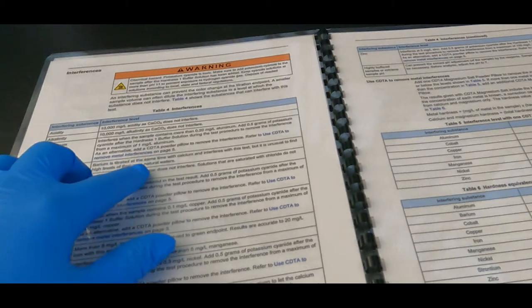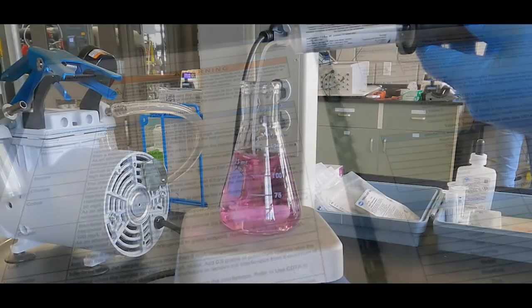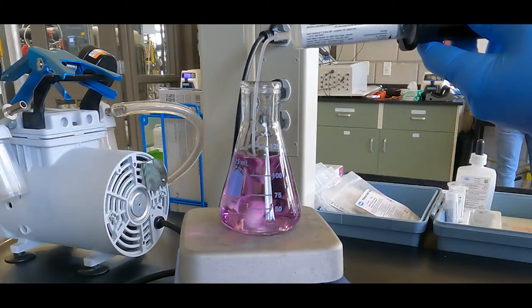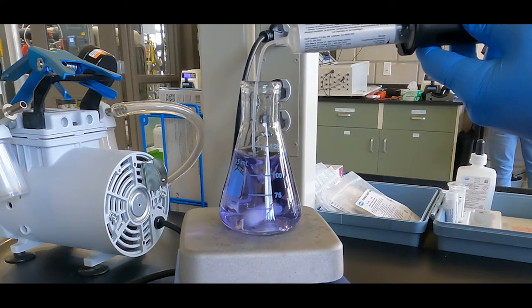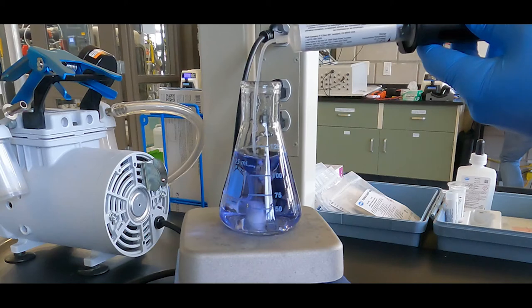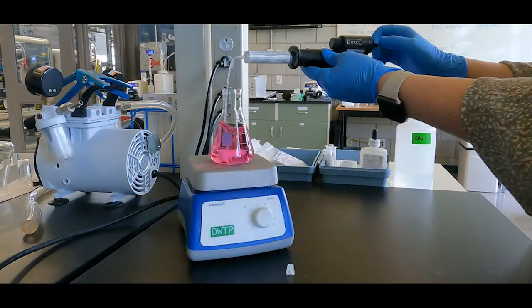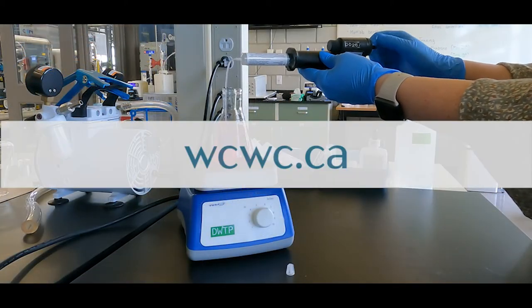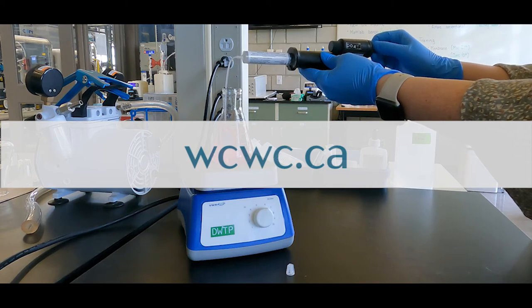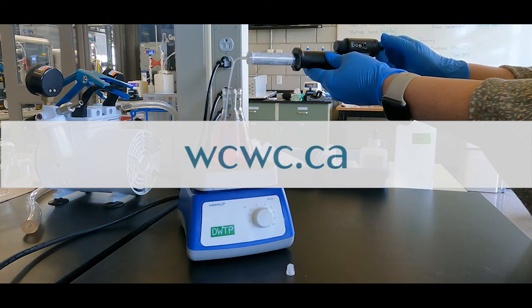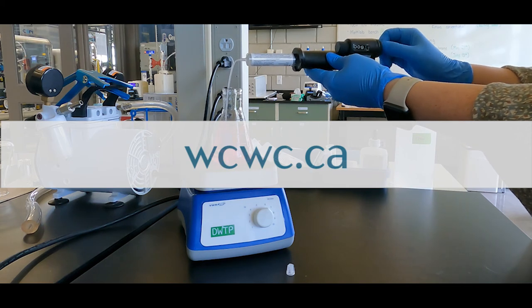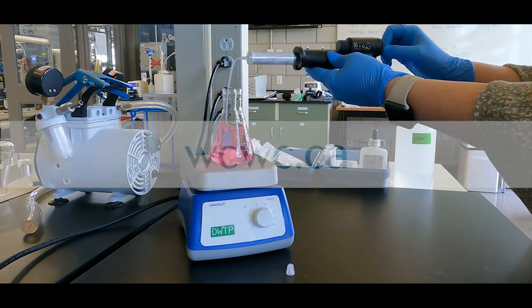If orthophosphate is present in a sample, it can cause a slow endpoint. To avoid this interference, extra time should be given during the titration to make sure you don't go past the endpoint. More videos and helpful resources related to drinking water are available on our Drinking Water Resource Library. Visit our website to learn more about our training courses and our pilot testing services.